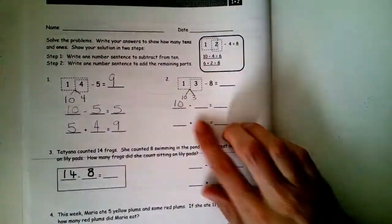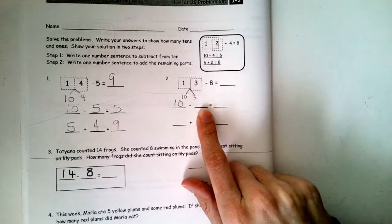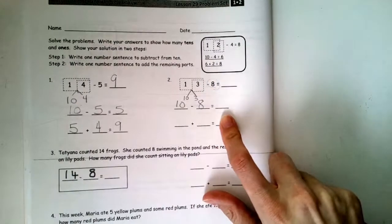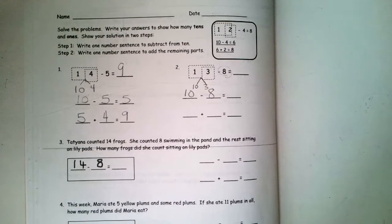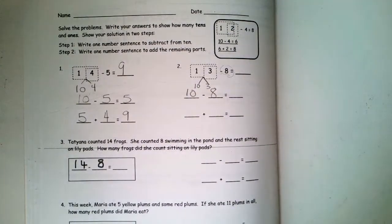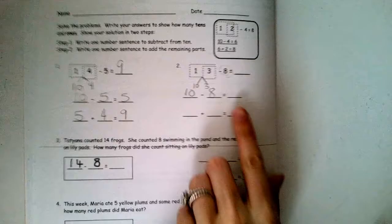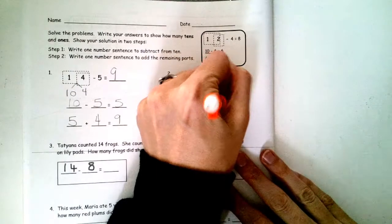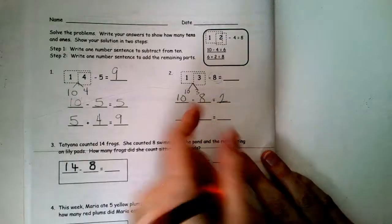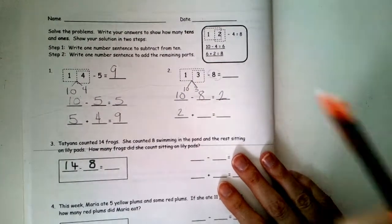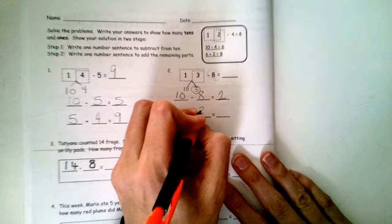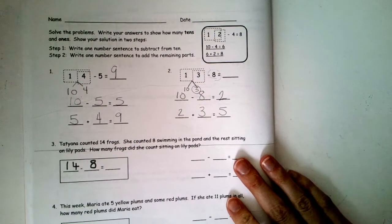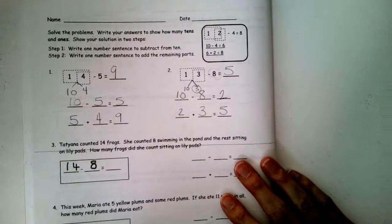Since we're doing a take from 10 strategy, the first thing we're going to do is we're going to do 10 take away something. We want the number that's in this number sentence. 10 take away 8 equals what? If you have 10 and you take 8 away, what's going to be left? Or the other way of thinking it is, who's 8's partner to 10? 8, 9, 10. Oh, I need 2 more. So, 2 is my answer there. It travels down to my next number sentence, so I can add those two parts back up. 2 and what's left here in my number bond is 3. So, 2 plus 3 equals what? 2 and 3 make 5. So, for 13, take away 8 equals 5.